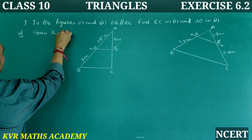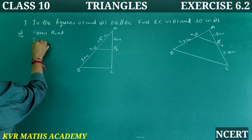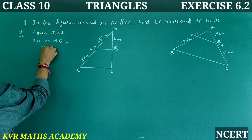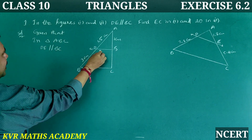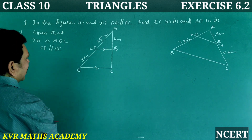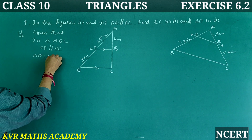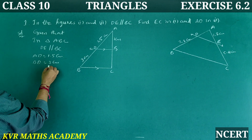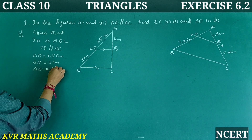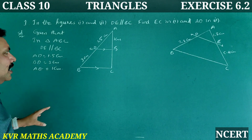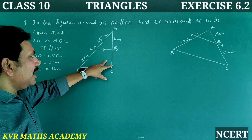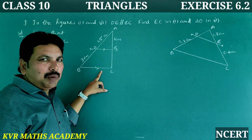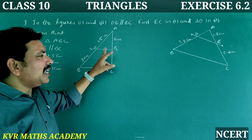Solution — First one. Given that in triangle ABC, DE is parallel to BC. AD is equal to 1.5 cm, BD is equal to 3 cm, and AE is equal to 1 cm.